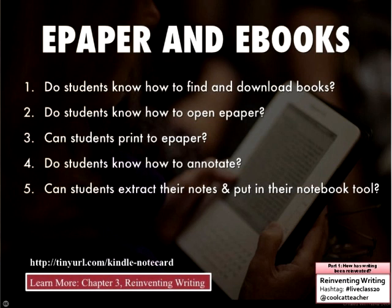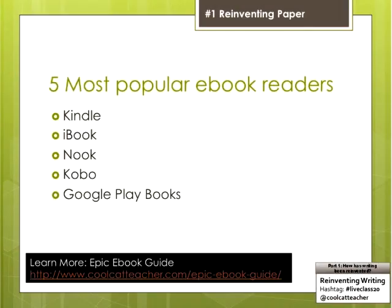The five most popular e-book readers right now are Kindle, iBook, Nook, Kobo, and Google Play Books. Blue Fire Reader is also popular and helps unlock DRM or digital rights management. Kobo is important because a lot of indie or independent authors are publishing there. If you want to publish independently with your students or by yourself, Kobo is a great place to go. It's got cool author tools and is an upcoming platform.